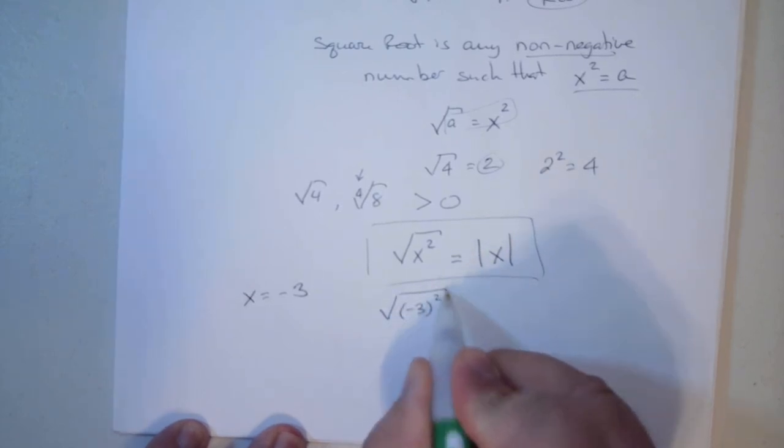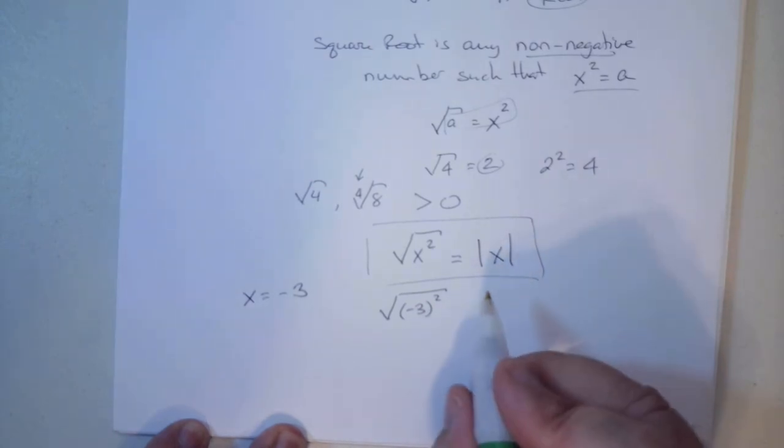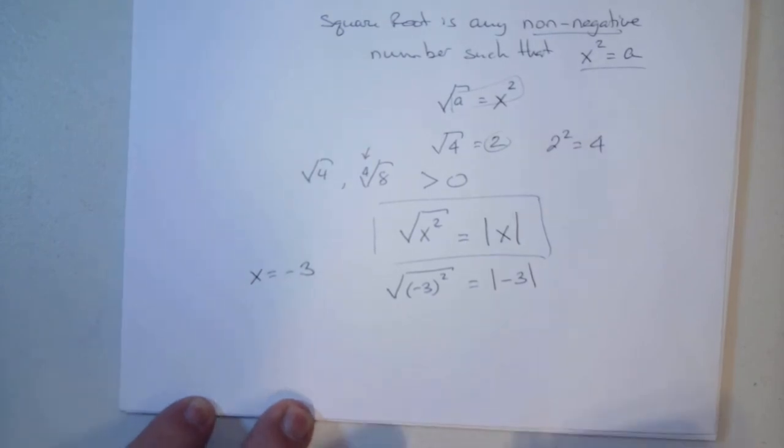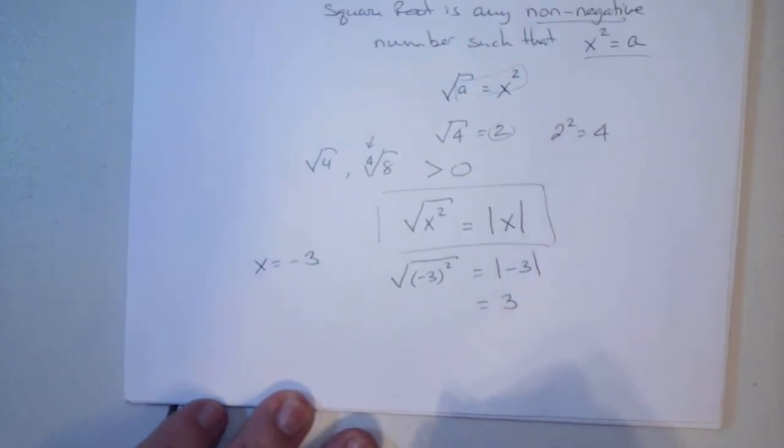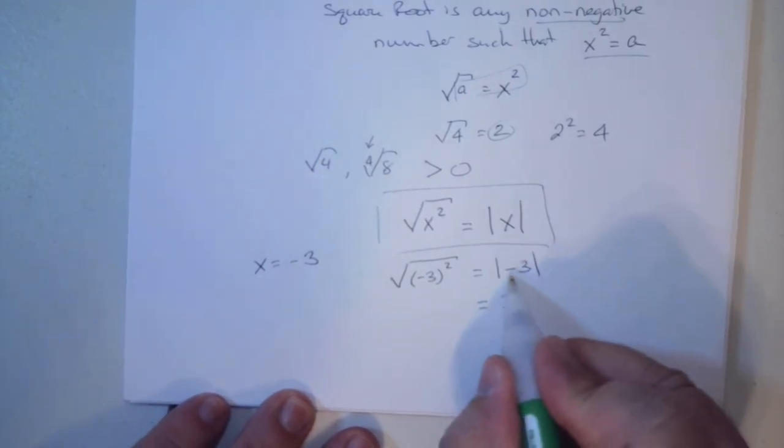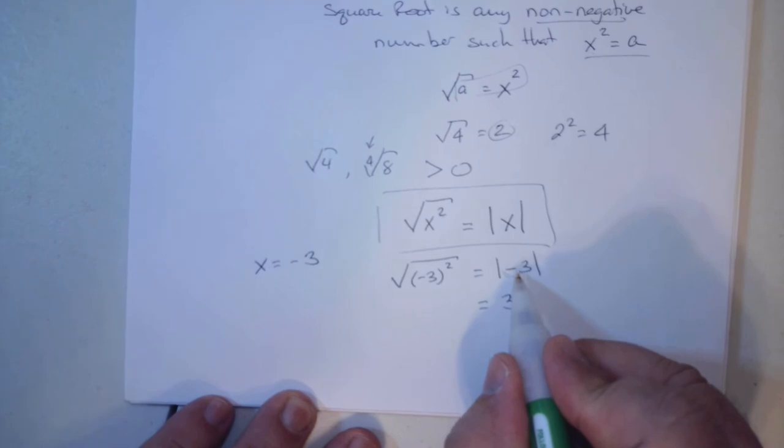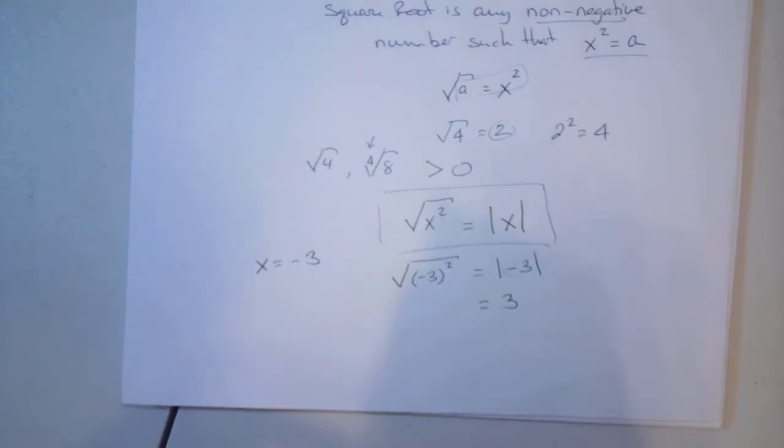The square root of x squared is the same thing as the absolute value of negative 3. So I have the square root of negative 3 squared. That's the same thing as the absolute value of negative 3. Absolute value of negative 3 is 3.